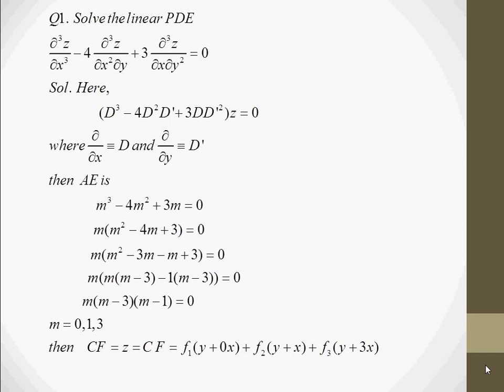Now we solve a problem. In this partial differential equation, we put ∂/∂x as D and ∂/∂y as D', getting the equation in form of D and D'. We put D equal to m and D' equal to 1, giving the auxiliary equation in terms of m. The roots are 0, 1, and 3, so the complementary function is f1(y) + f2(y + x) + f3(y + 3x), and CF equals z since the right-hand side of the PDE is 0.